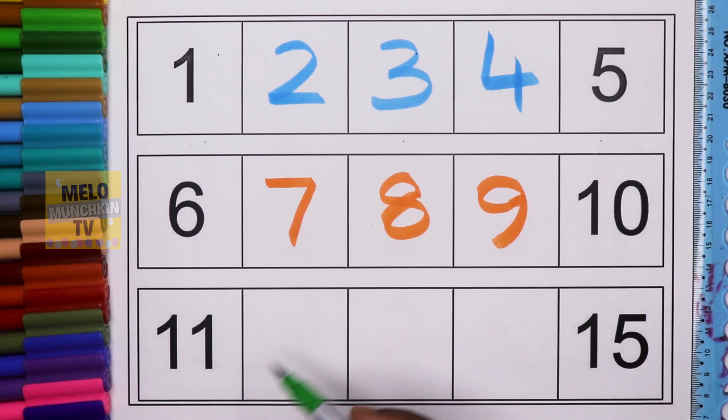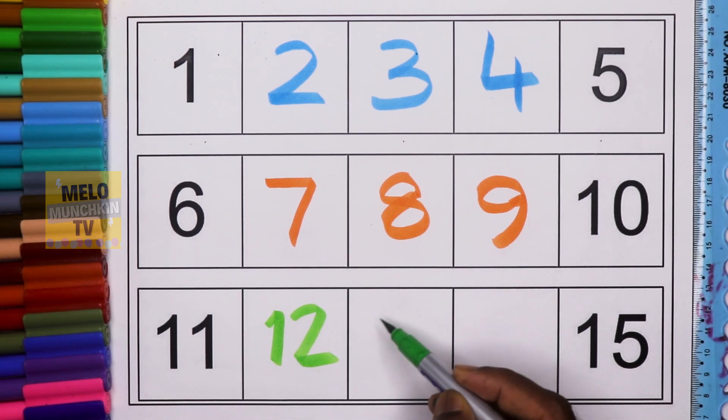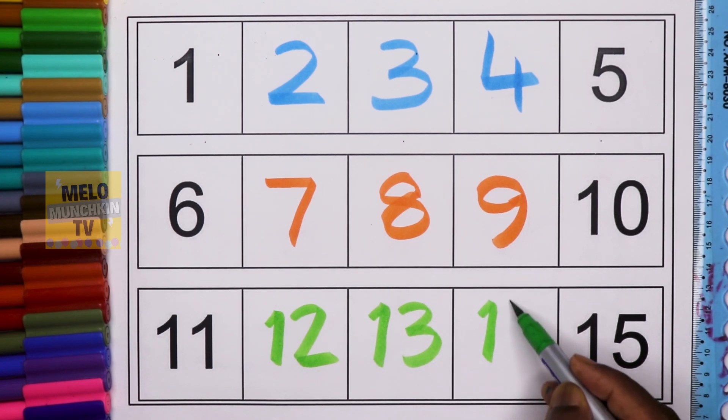And finally I'll take green color to write between 11 and 15. After 11 it's 12, and after 12 it is 13, and after 13 it is 14.